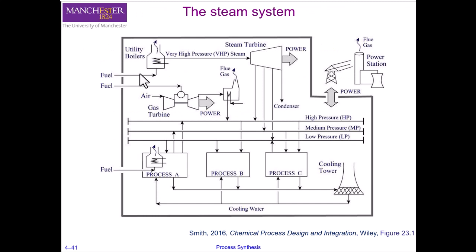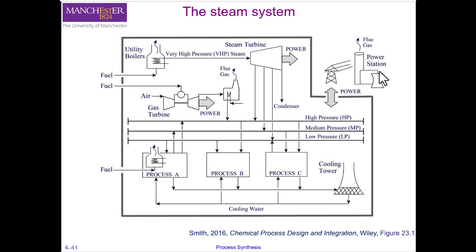Here is an overview of a site's energy utility systems. At the top left corner, you have a boiler that uses fuel and sometimes waste products from the process to convert water into steam. The steam is produced at very high pressure, but generally not used above 40 bar, largely because of the cost of piping systems for transporting steam at very high pressures around the site. The steam can be let down through a steam turbine, which can produce steam at different pressures — very high pressure, medium pressure, and low pressure steam. The power generated by the steam turbine can be used on site along with power imported from a power station.